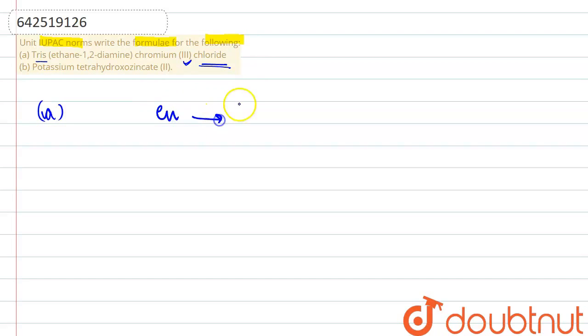First of all, we need to know EN. EN is our ethane-1,2-diamine, also known as ethylenediamine, which is a bidentate ligand.